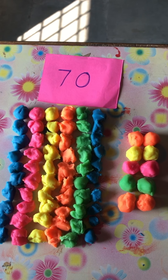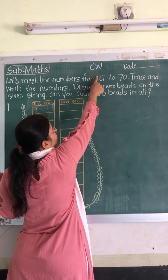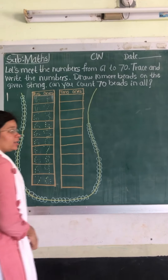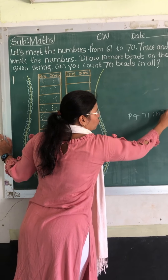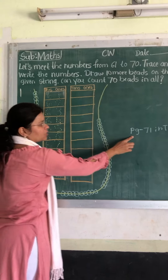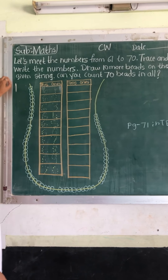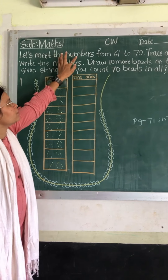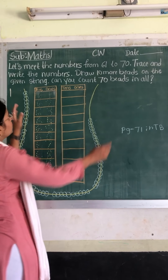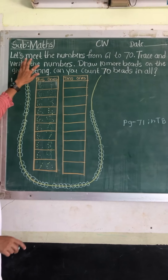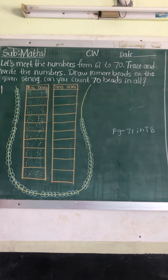I hope all of you understand today's activity. Let's start today's classwork. First, we have to write CW and the date. Today's classwork is on page number 71 in the textbook. Let's read the heading: 'Numbers from 61 to 70.' Today we are writing 61 to 70 numbers. Trace and write the numbers — in the first line we trace, in the second line we write.